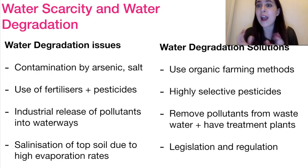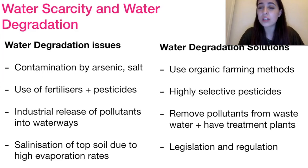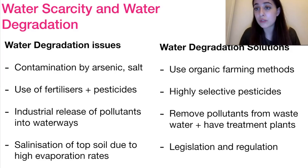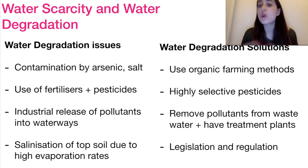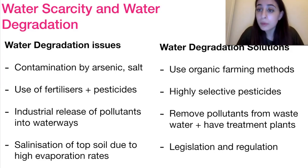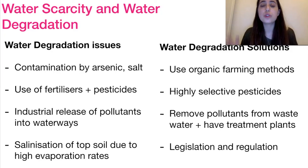Water degradation refers to how we pollute and damage the water we do have access to. This includes contamination with arsenic, salts, and other minerals; use of fertilizers and pesticides causing eutrophication; releasing pollutants directly into waterways from factories; and salinization of topsoils due to fast evaporation rates as a result of climate change. Solutions include organic farming methods to minimize eutrophication and impact on the hydrological cycle, using highly selective pesticides that wouldn't damage the overall ecosystem, removing pollutants in wastewater treatment plants, and legislation and regulation at the highest level.